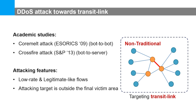We note the attacking features. The individual flows are very small and can appear like normal network traffic, making it very hard to identify such an attack. The volume of each flow individually is small, but the aggregate volume is enough to congest the victim link. Furthermore, the attacking target — namely the transit link — is usually outside the final victim area, making it very hard to locate the real target.